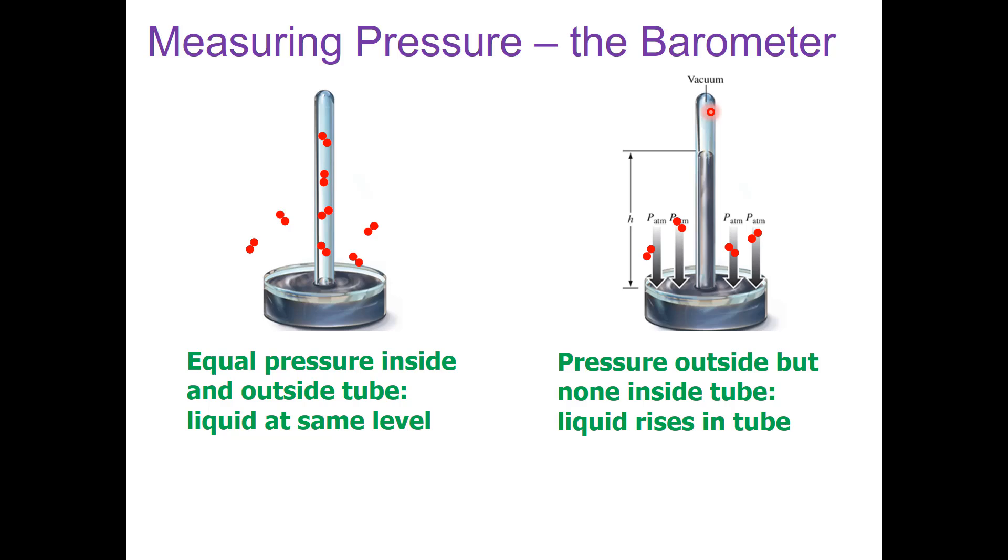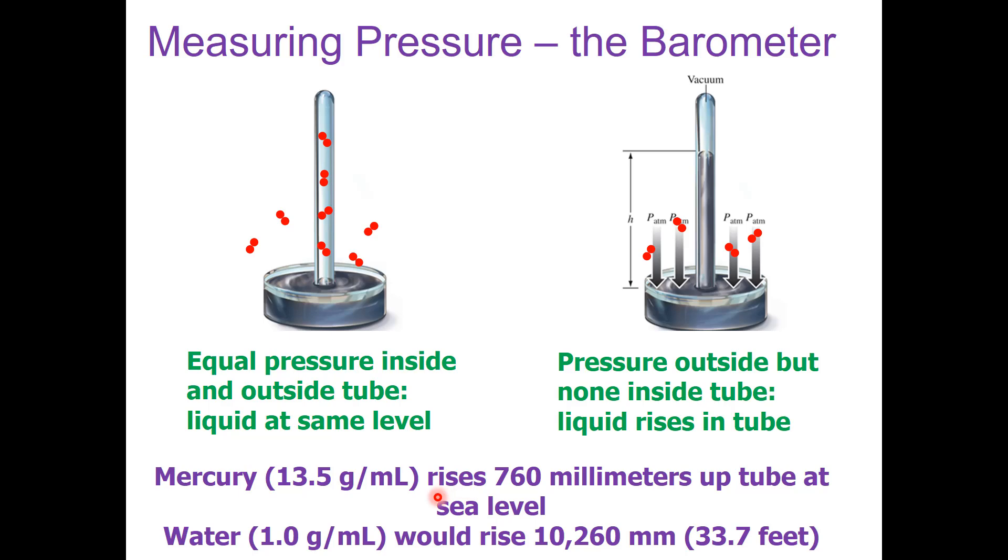If the glass tube has been evacuated to zero pressure, then the pressure of the atmosphere will press down on the liquid such that the mercury rises up the tube to a particular height. That height is 760 mm at sea level, or 76 cm.